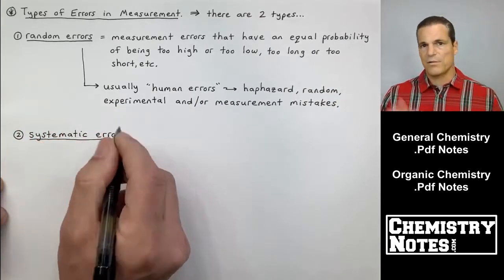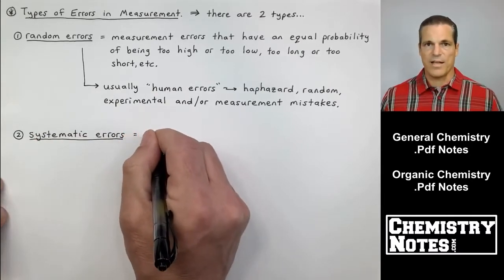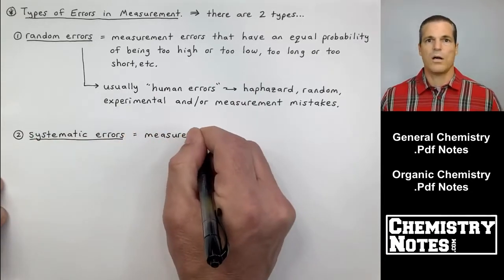They happen one direction or the other 50% of the time. Too high, too low, too long, too short, etc.